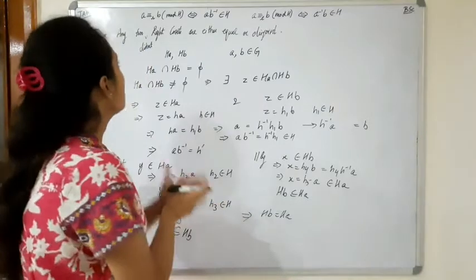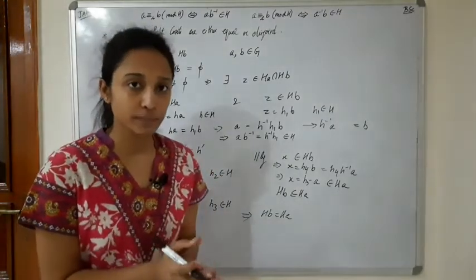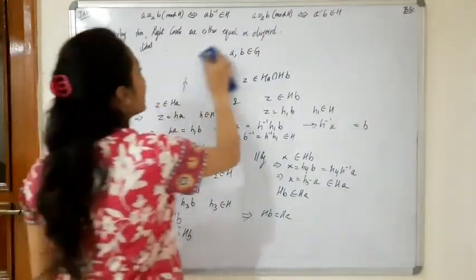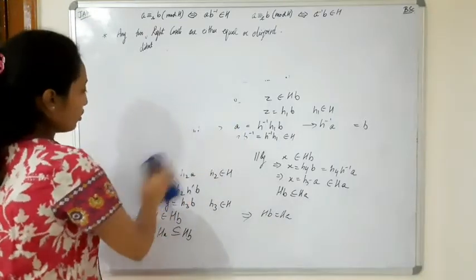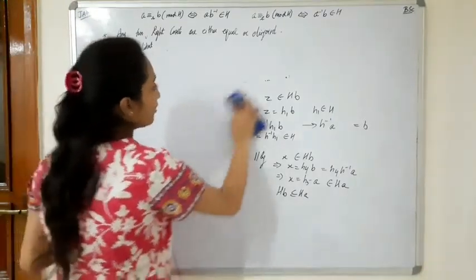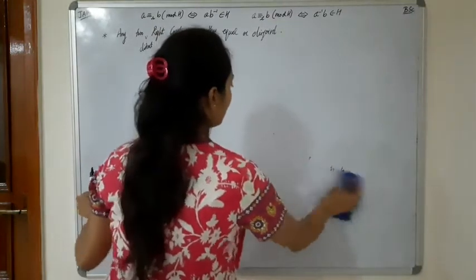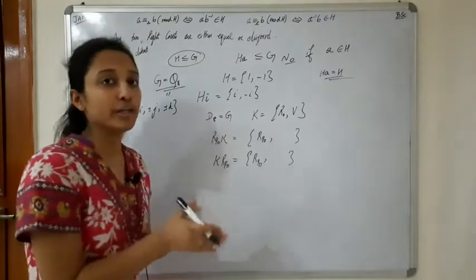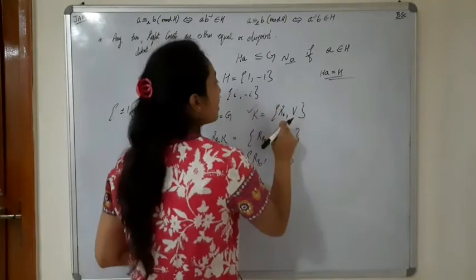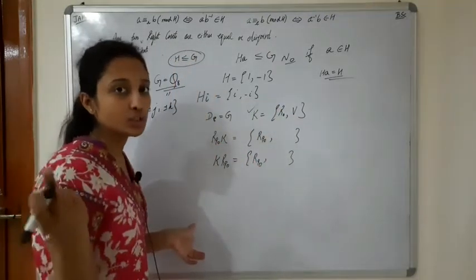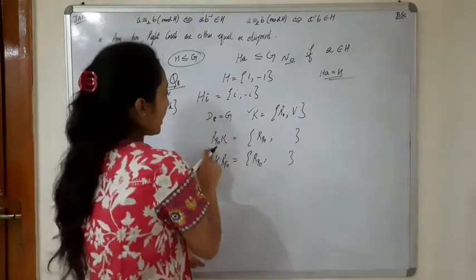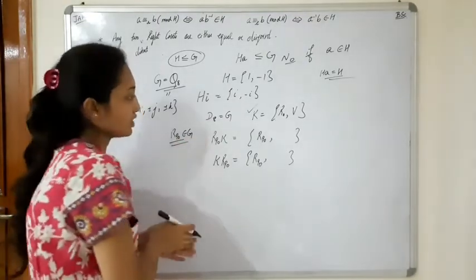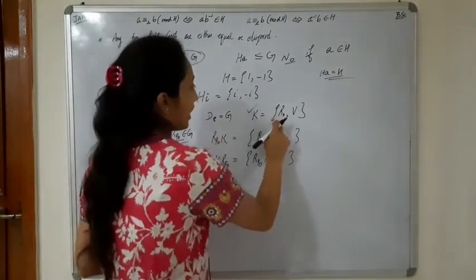Now let's do an example where we find right cosets and left cosets differently. We consider a symmetry group where the elements include rotations R0, R90, R180, R270 and reflections. Here R90 belongs to G and we look at right coset R90.